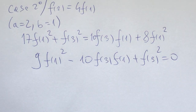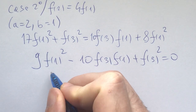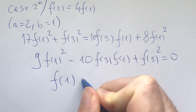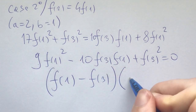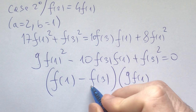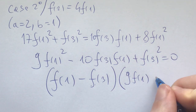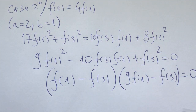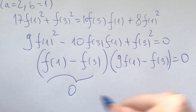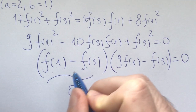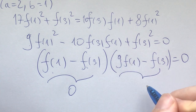This is a factoring problem. Noticing that f(1) = f(3) satisfies this, we can factor as (f(1) − f(3))·(9f(1) − f(3)) = 0. So there are two cases: either f(1) = f(3), or f(3) = 9·f(1).